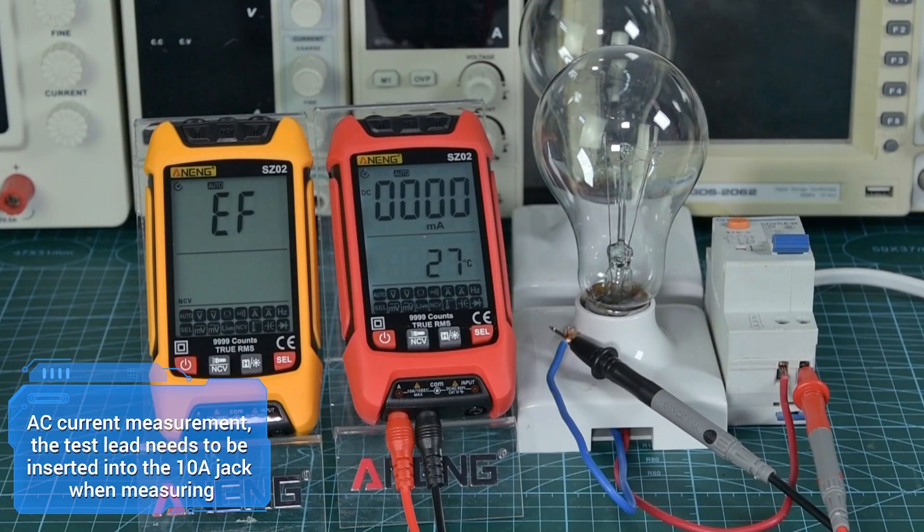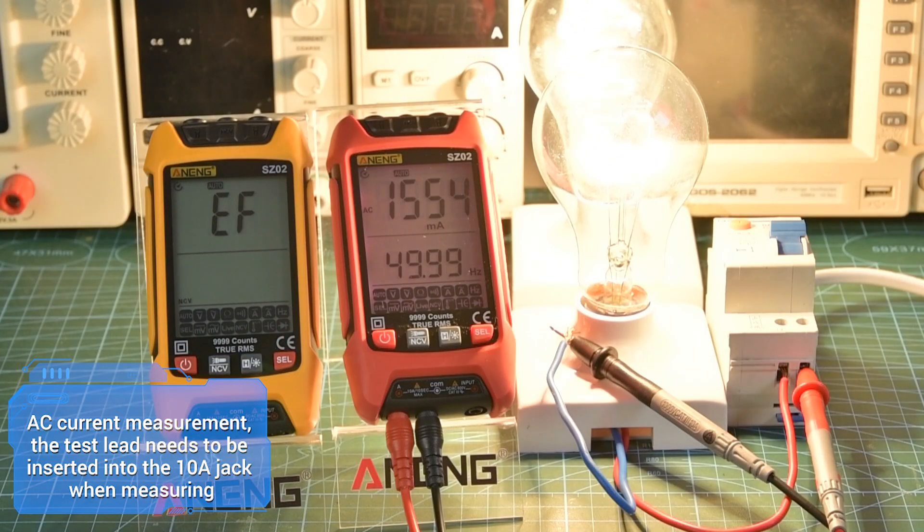For AC current measurement, the test lead needs to be inserted into the 10A jack when measuring.